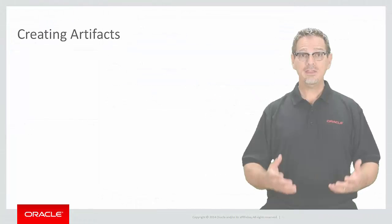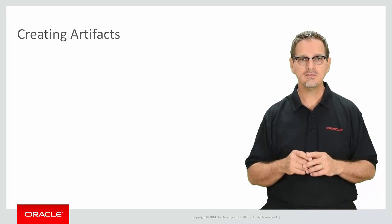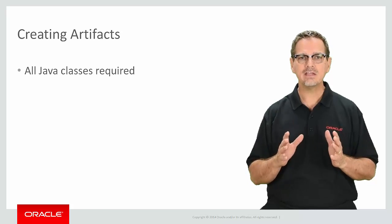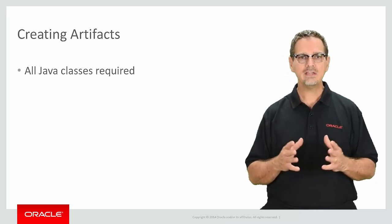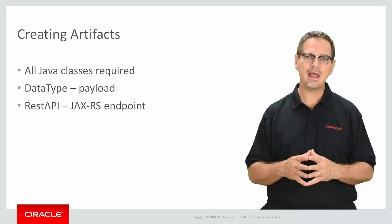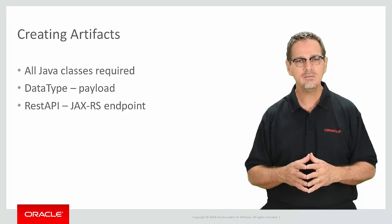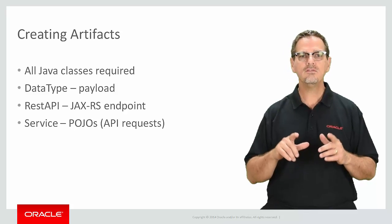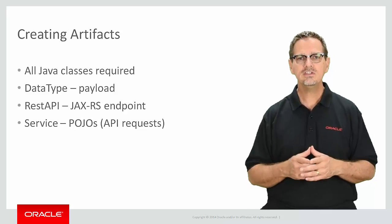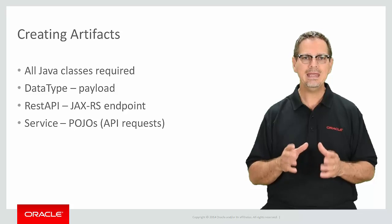Now that we have the APIs defined, we can create the artifacts that interface with the REST services at runtime. The artifacts include all the Java classes required to interact with the service. The classes include data type classes, which represent the payload; REST API classes, which represent the model JAX-RS specified endpoint; and service classes, which are all of the POJOs representing the REST API request. All of these classes are created for you and can be recreated any time the API definitions change.